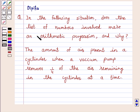In the following situation, does a list of numbers involved make an arithmetic progression and why? The amount of air present in a cylinder when a vacuum pump removes 1/4 of the air remaining in the cylinder at a time.